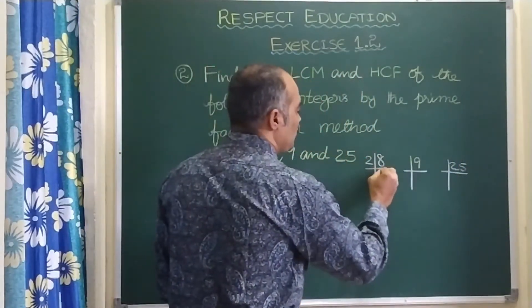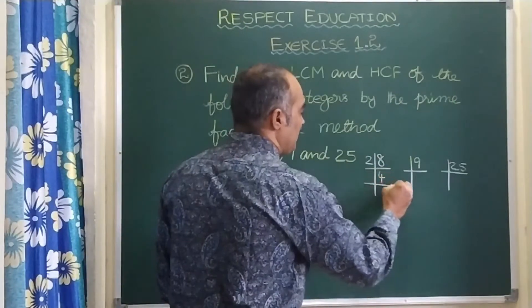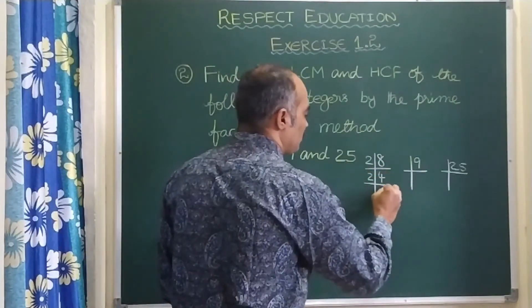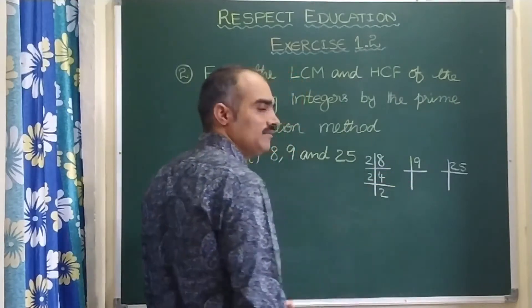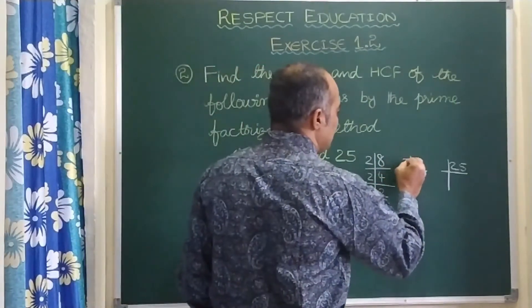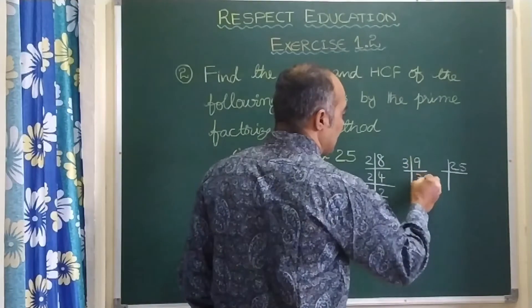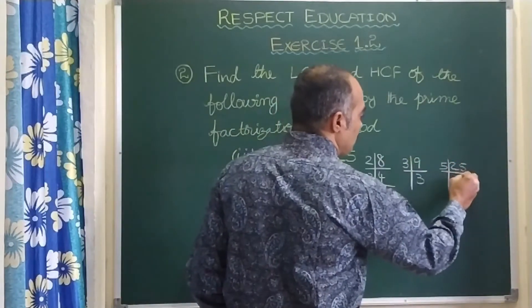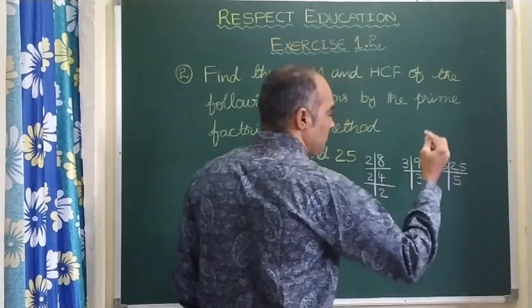8 means here 2 — 4 twos are 8, again 2 twos are 4, that is all. 9: 3 threes are 9. 25: 5 fives are 25.